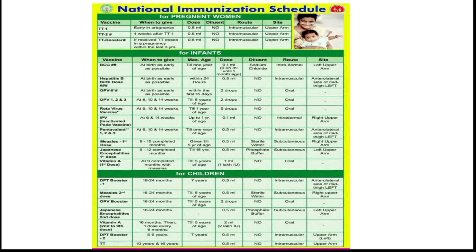The TT booster dose is given when the mother becomes pregnant within 3 years of her last pregnancy or within 3 years of her last TT dose. In these cases, TT1 and TT2 are not given — only the TT booster is given. The dose is 0.5 ml, intramuscular, upper arm.